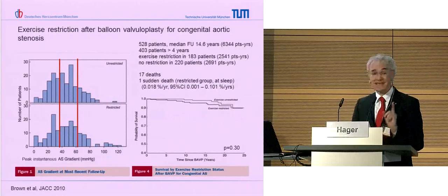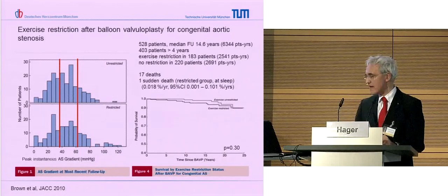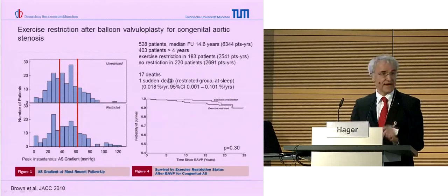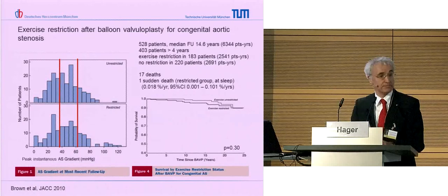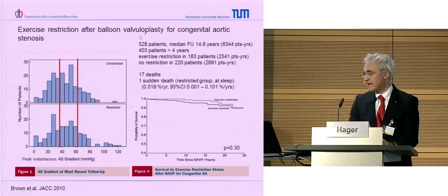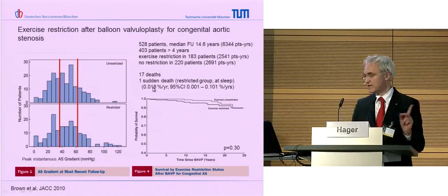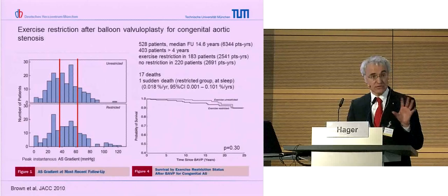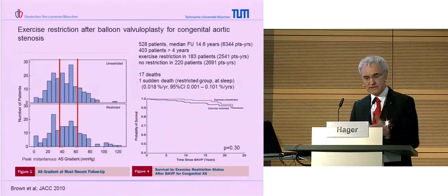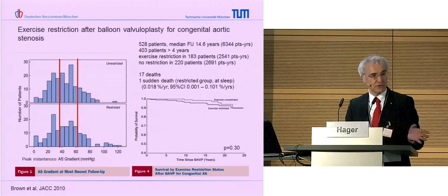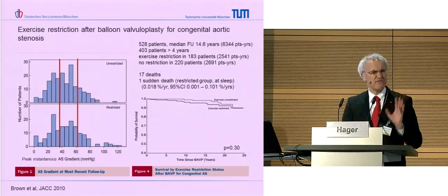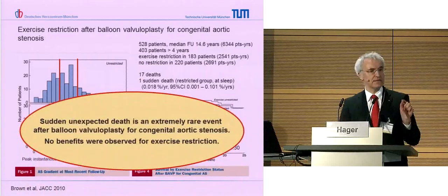They also showed how many sudden cardiac deaths they found: only a single sudden cardiac death. That was a 28-year-old man who was in the restricted group, and it happened during sleep. So that calculates for an annual rate of 0.018% per year - compared to the previously cited 1% per year. That's about the risk of surviving just normal traffic for one year in Germany, or the risk of being shot on the road in America. So we have a very, very low risk - that is the main result of this study.